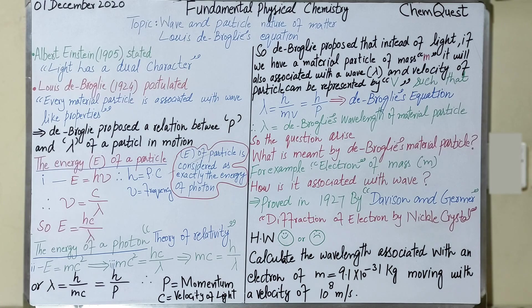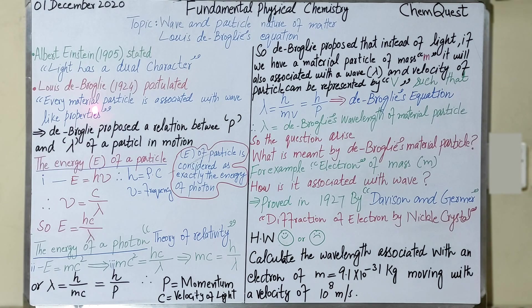Extending this idea further, in 1924, Louis de Broglie postulated that every material particle is associated with wave-like properties. Any material particle you have, its wave-like properties will necessarily be there. By material particle we mean any matter or substance which has mass. In the context of physical chemistry, we consider atomic particles — for example, we can consider electron as a material particle.